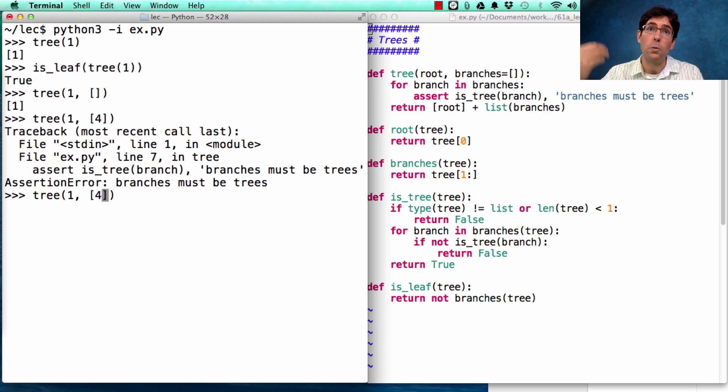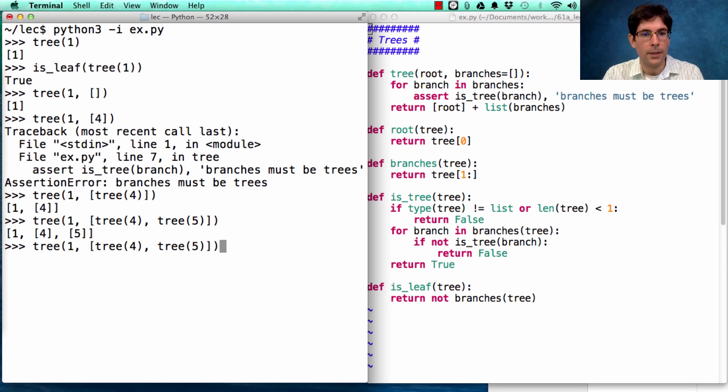So, if I wanted to create a root value of 1 and then a branch that was a leaf with 4 in it, I have to call tree on 4. Now, I got a legal structure. And if I want to add more branches, I can. And if I want those branches to have branches, then I just add them in. So, this one will now have its own branch, which is a leaf that has 6 in it.